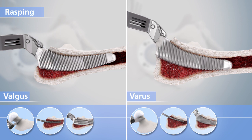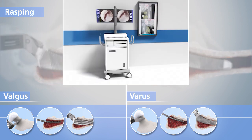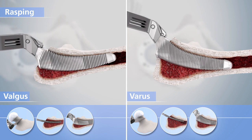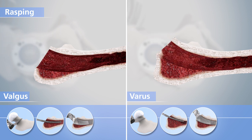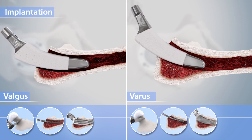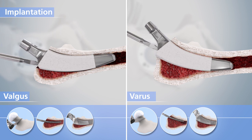For control of the correct positioning and resulting type of anchorage, as well as of the correct size selection, in calcar-guided short-stem endoprosthetics, intraoperative X-ray control under fluoroscopy should be carried out after the initial trial reduction. In particular, sufficient contact between the implant and the distal lateral cortex must be ensured. Adjustments can be made at this point of the surgery if necessary. The final implant follows the path of the rasp and will generally be seated in the exact same position.